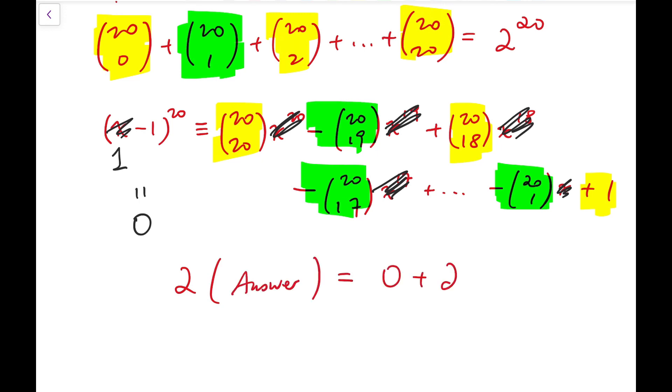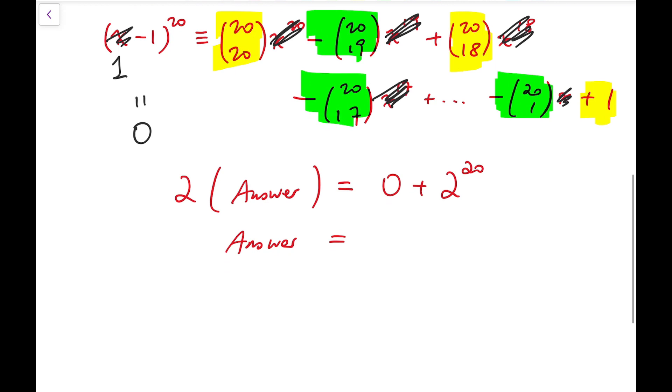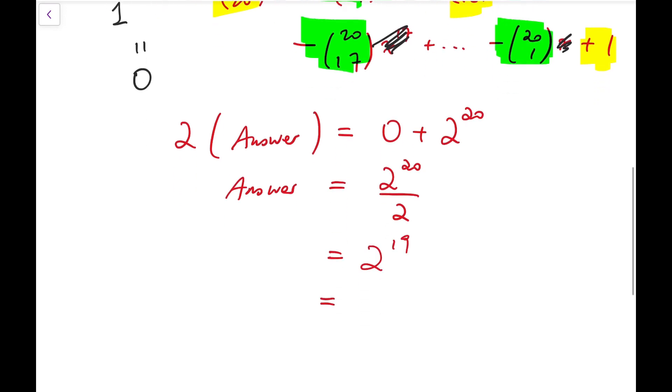Equals 0 plus 2 to the power 20, so that means the answer of this sum should be 2 to the power 20 over 2, and that's 2 to the power 19, which equals 524,288.